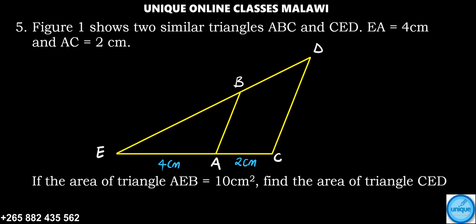Let's see how we have an answer to this problem. Figure 1 shows two similar triangles ABC and CED such that EA = 4 centimeters.